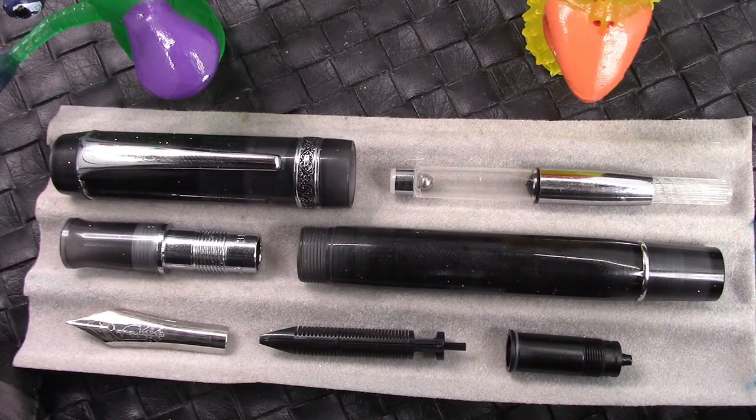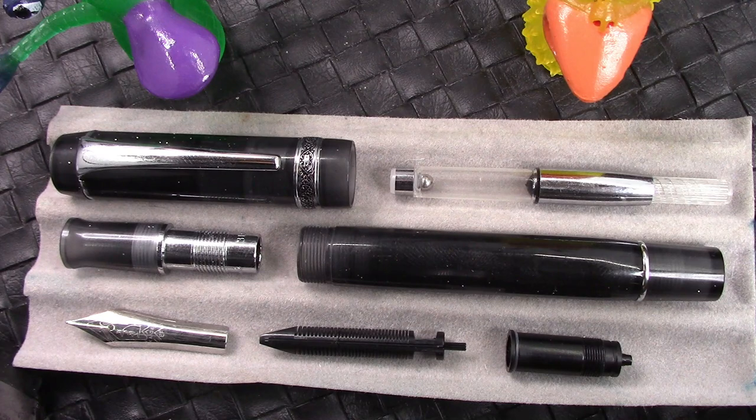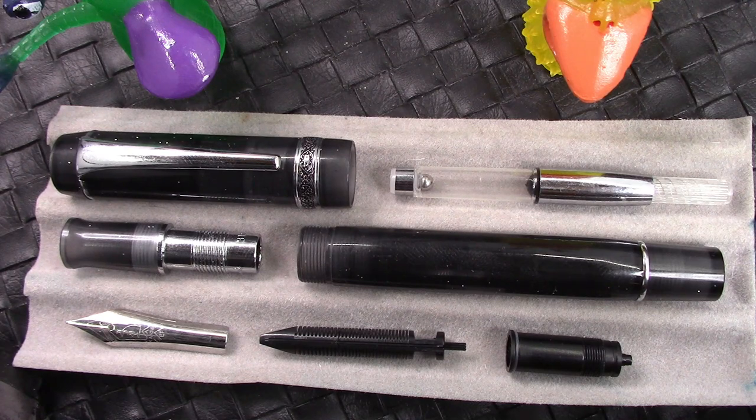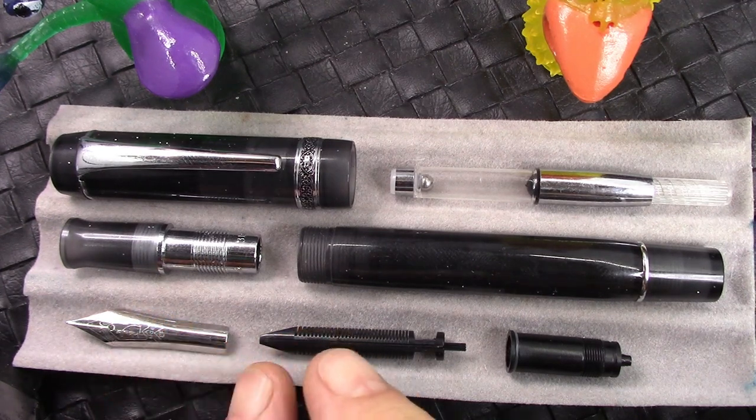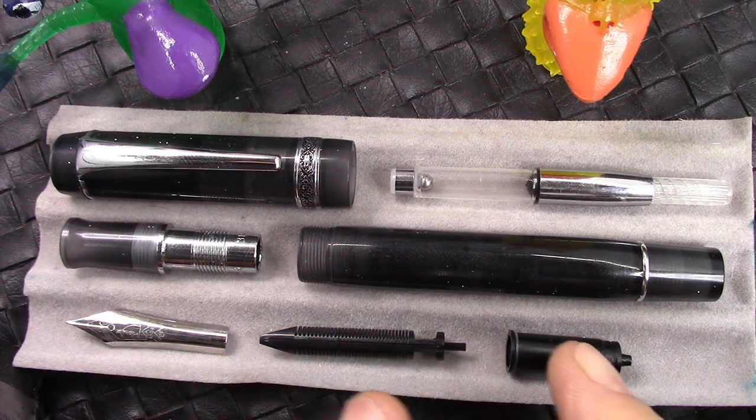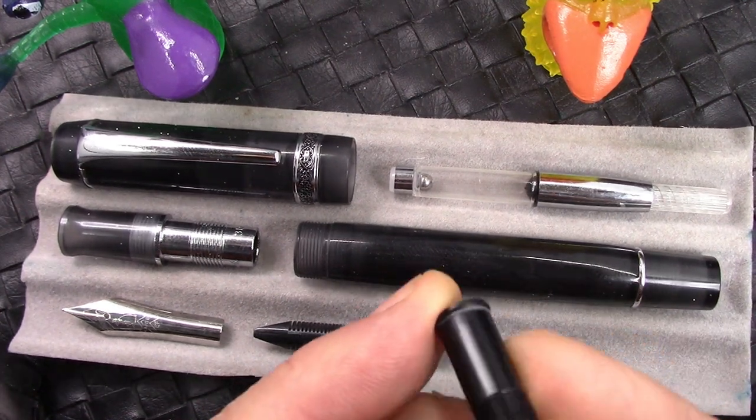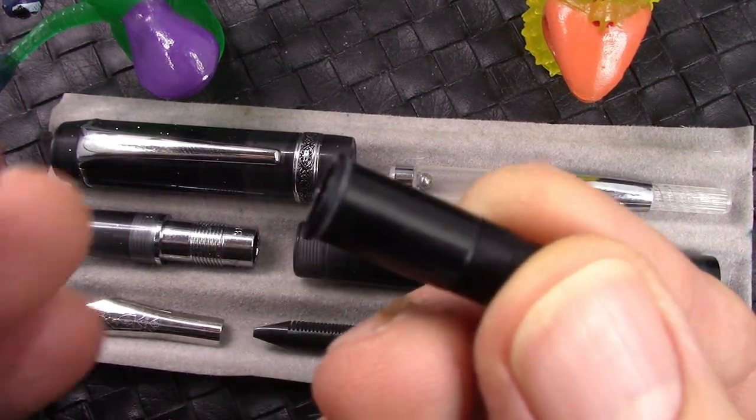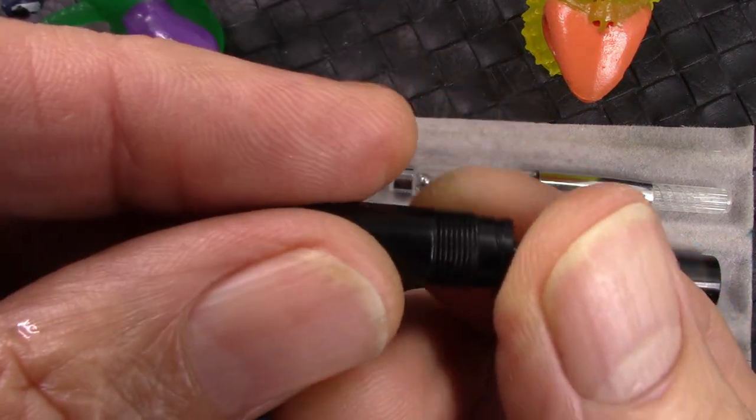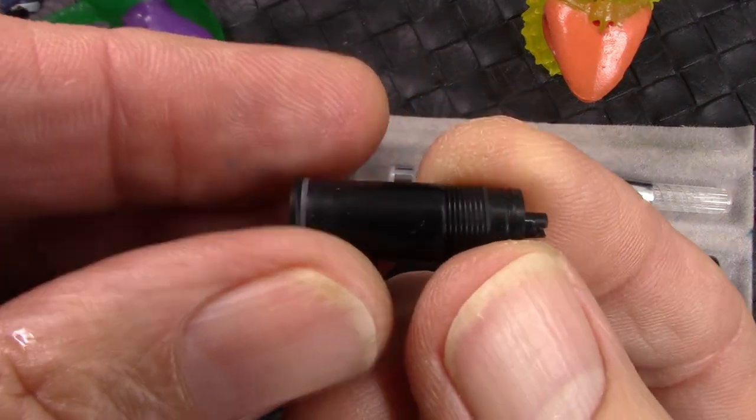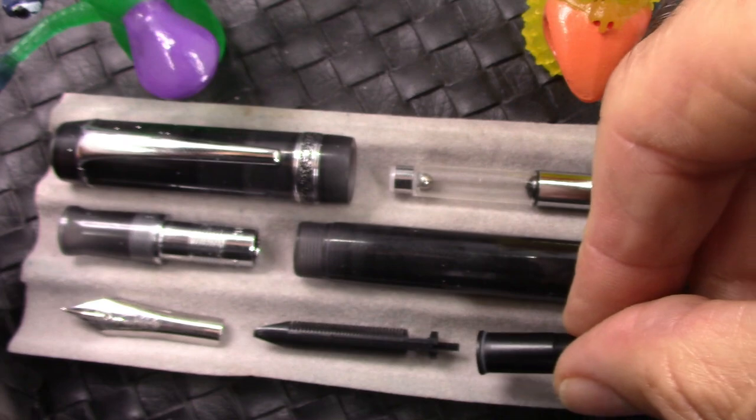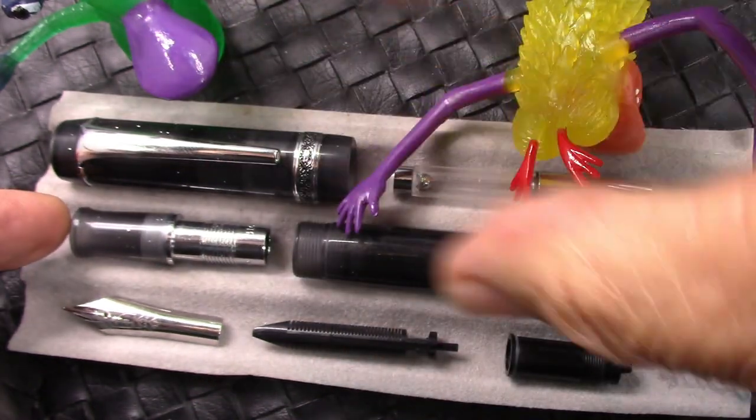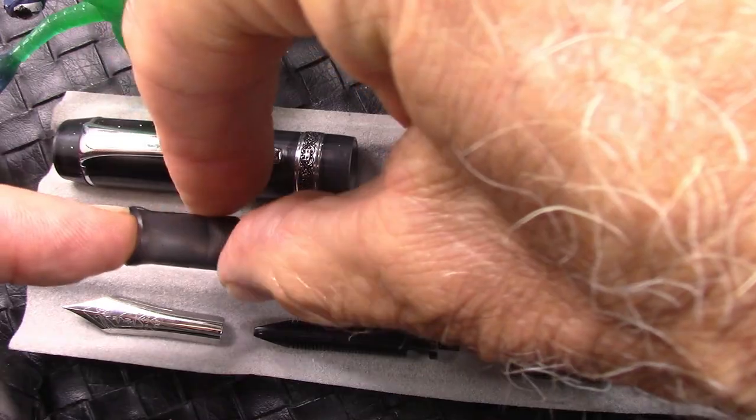Nice things about the 316 is it's easy to disassemble, at least what I'm showing you here now, which is the more functional disassembly. Nib and feed pull out of this nice nib collar, which has an o-ring down there at the bottom, which I think is a great design because it stops ink from getting between this nib collar and this section.